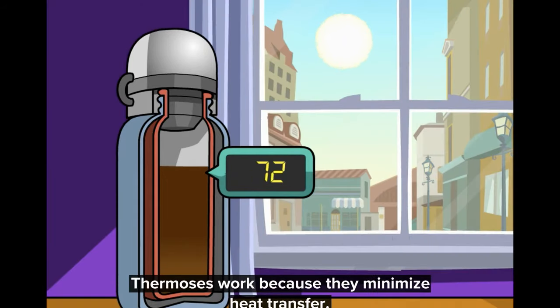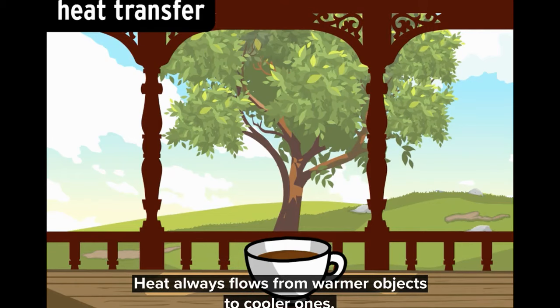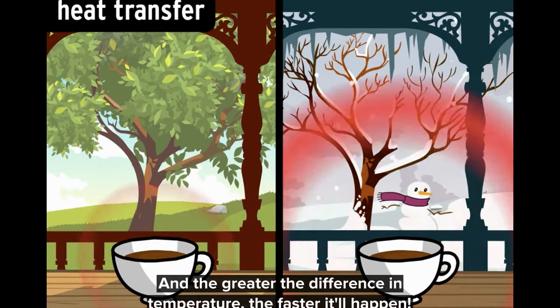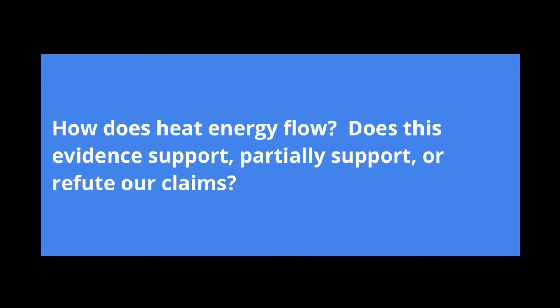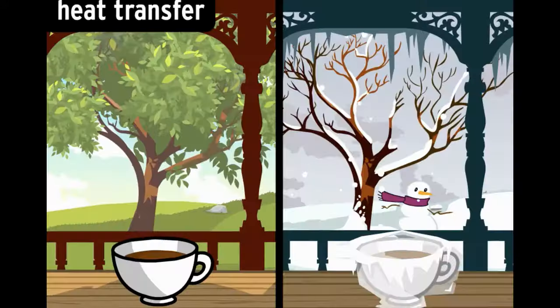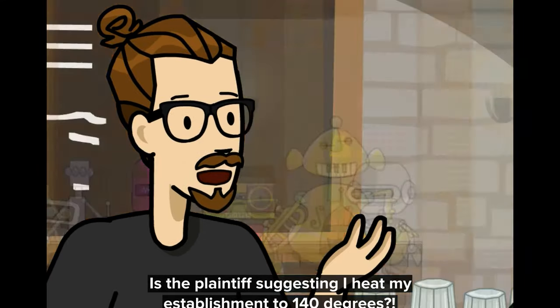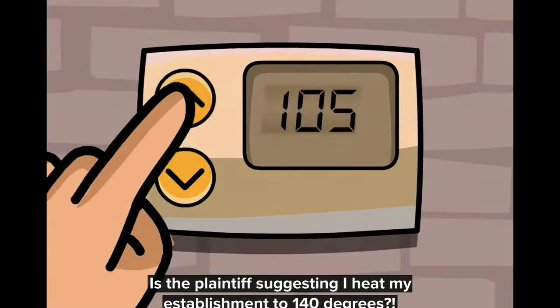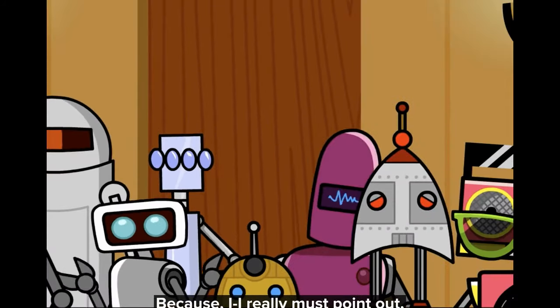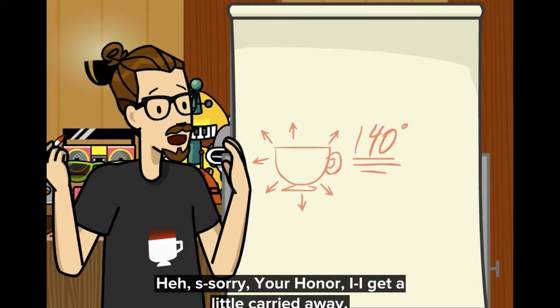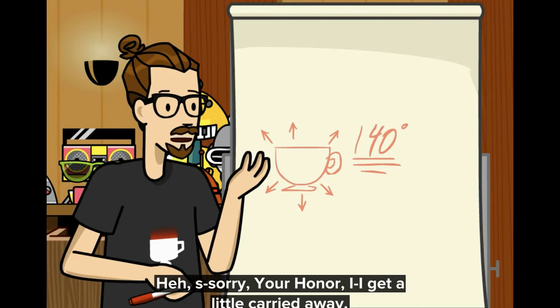Thermoses work because they minimize heat transfer. Heat always flows from warmer objects to cooler ones. The greater the difference in temperature, the faster it'll happen. The only way to keep some coffee from cooling is to put it somewhere just as hot. Is the plaintiff suggesting I heat my establishment to 140 degrees? Because I really must point out, 140 is the only proper temperature for a macchiato.